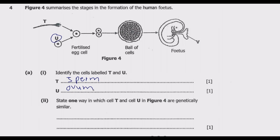Once you know those key points, you'll be able to answer either multiple choice questions or short answer questions. It's also important that you know what V is. V is the placenta. The placenta is a temporary organ that forms in the uterus during pregnancy. It attaches to the uterine wall and provides nutrients and oxygen to the baby through the umbilical cord.